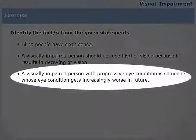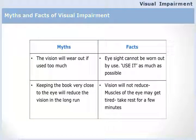The last sentence is the correct fact: a visually impaired person with a progressive eye condition is someone whose eye condition gets increasingly worse in the future. It's interesting to note how many myths are associated with visual impairment. For example, people believe that if a person has low vision they should not use their vision at all. On the contrary, a person with limited — or residual — vision should be encouraged to use it as much as possible.